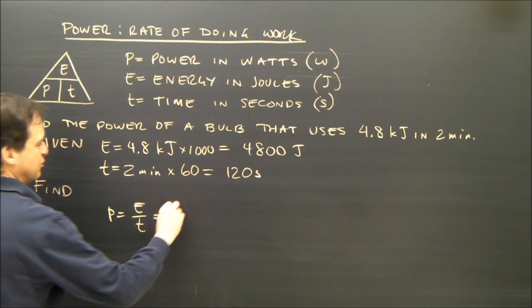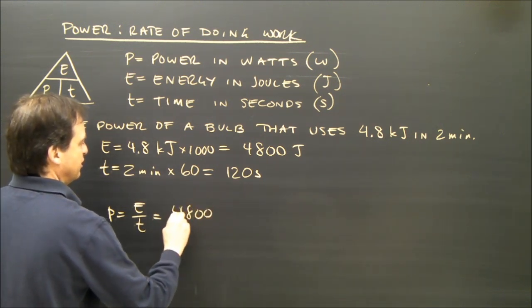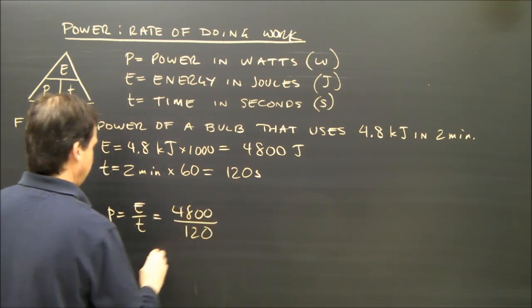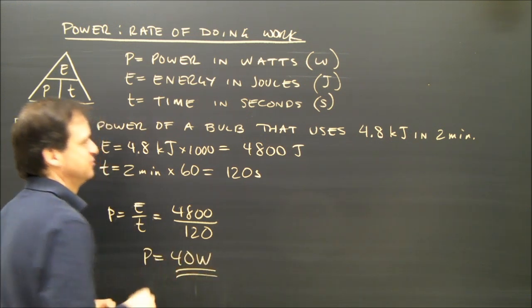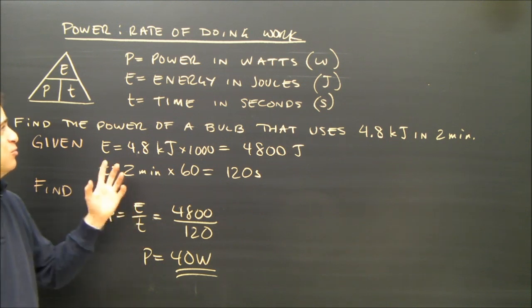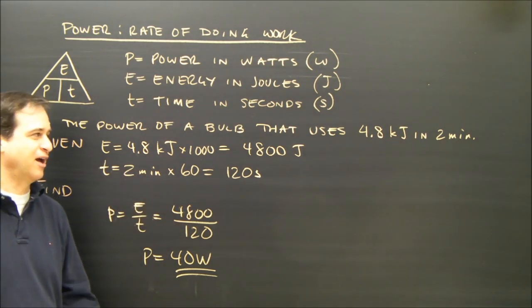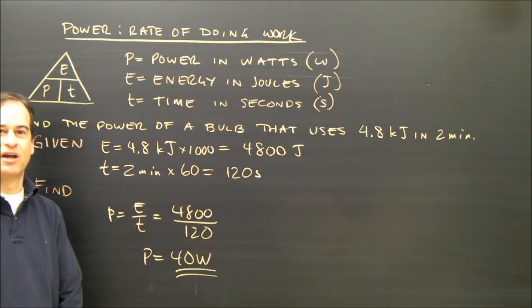So that is 4,800 divided by 120. The power is 40 watts. Simple formula to use. One of the last electricity formulas we have. Let's go on and do the last few and then we're finished with electricity.